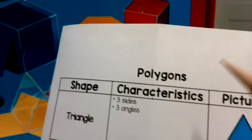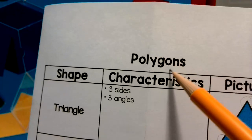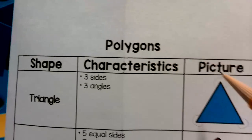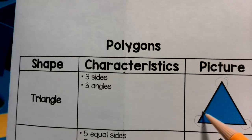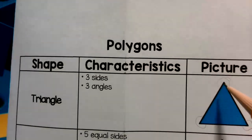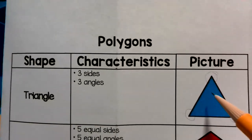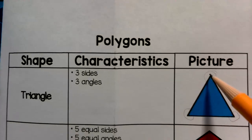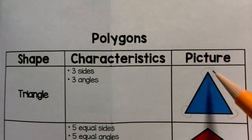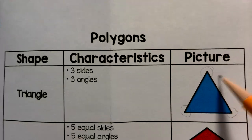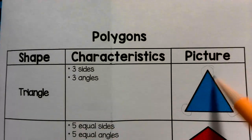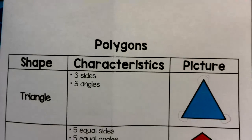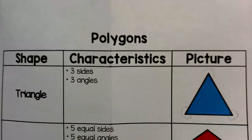A polygon is a shape that has two or more straight sides that meet and close. This is a closed figure — remember my trick with the gate: no gate is open here, so all the sides are shut.